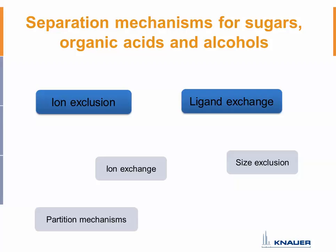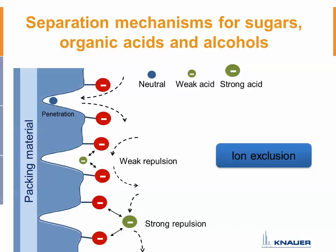Not everybody is familiar with these, so here is a brief explanation. Starting with ion exclusion: compared to an ion exchange column that uses attractive forces between anion and cation analytes, the ion exclusion mode uses repulsive forces between anions of the analytes and the packed gel. The ion exclusion mode is never used solely — it is always a balance with different modes. But ion exclusion is really important when you analyze organic acids.